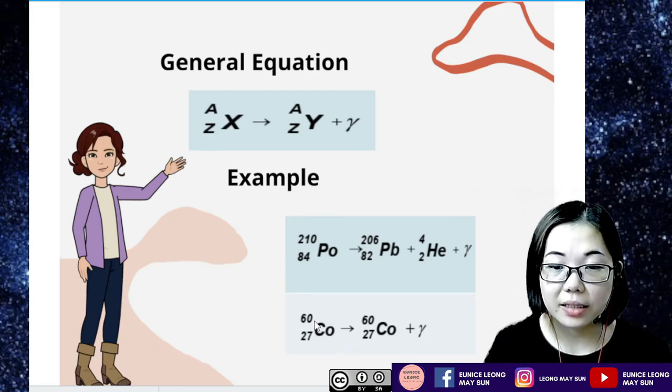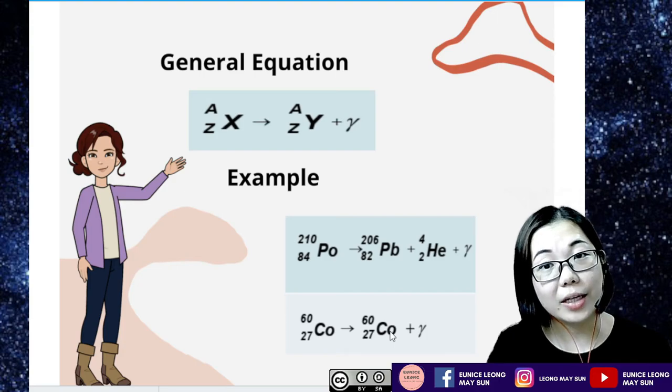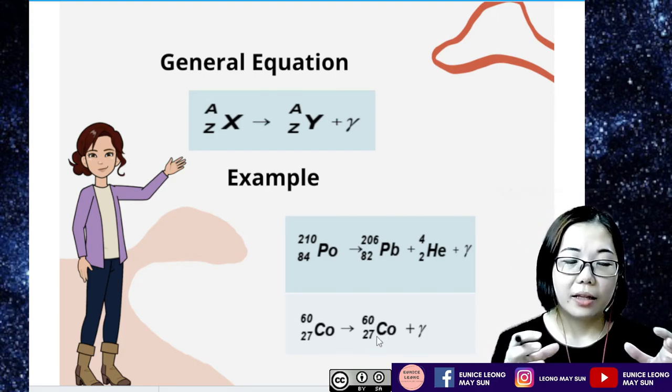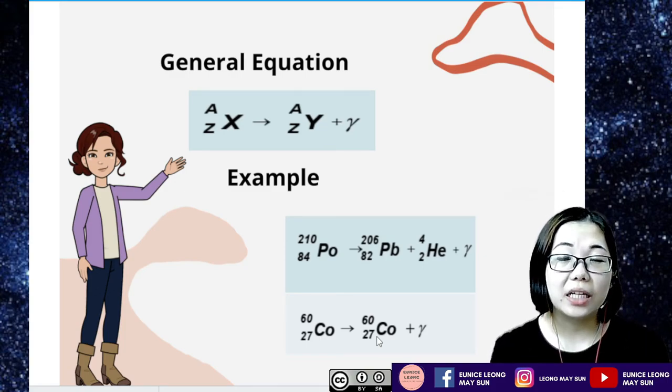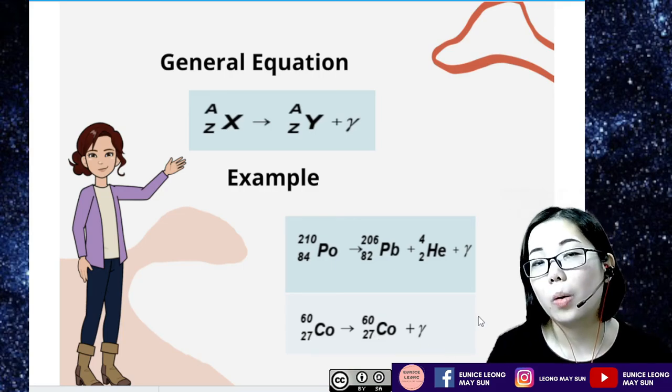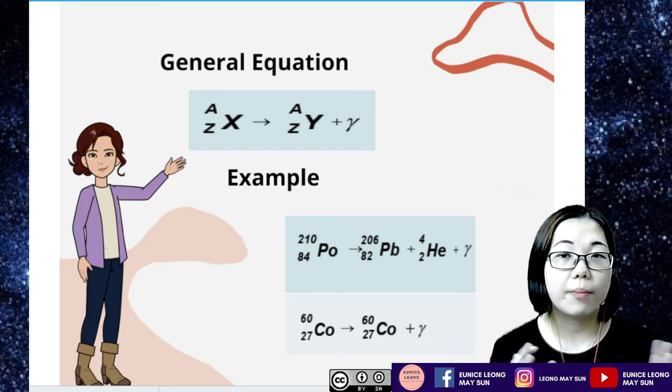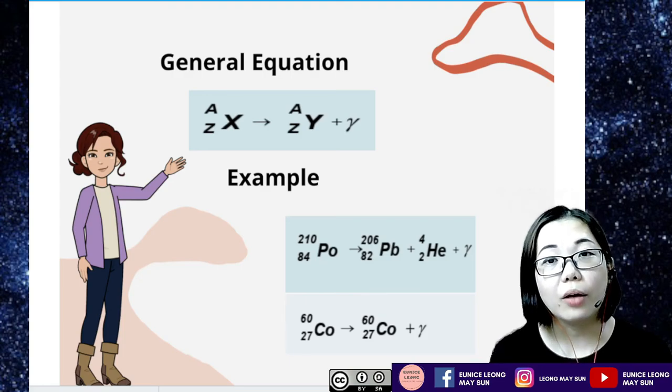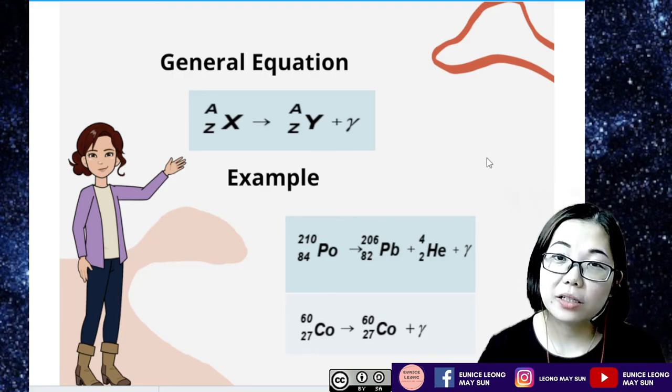Or Cobalt-60-27, it decays by releasing out a gamma decay and is still Cobalt-60-27. So this means that the nucleus was originally unstable because of too much internal energy. So it emits out a gamma radiation to become even more stable. So I hope from this particular explanation you understand what is alpha decay, beta decay, and gamma decay. The next video I'm going to be teaching you guys how to actually solve problems with radioactive decay. So that's all for this particular video. Bye everyone!